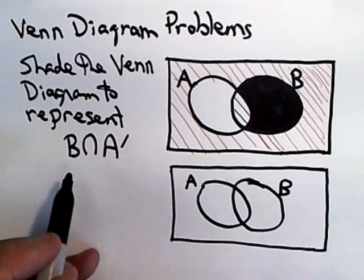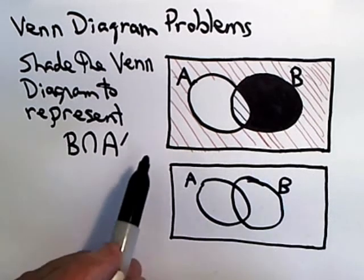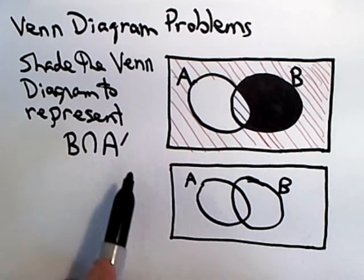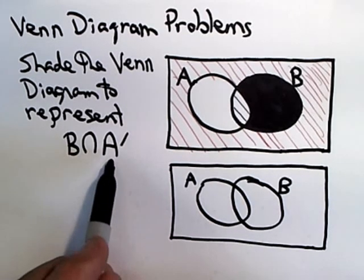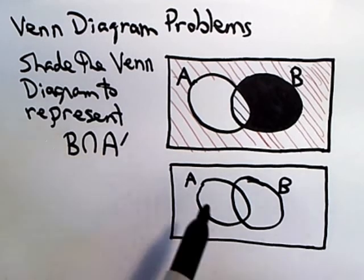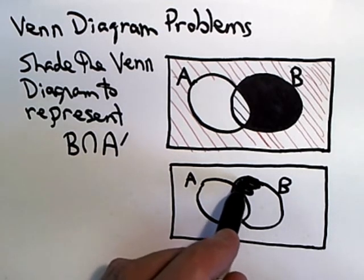So if you think of it that way, I wouldn't have to do any of this previous preliminary shading. I could just say it's the things in B that aren't inside of A. So I know I'm mostly looking inside the set B, but I'm leaving out anything that laps over into the set A. And that gives me exactly the same result.